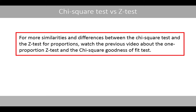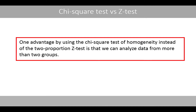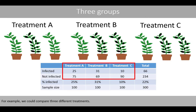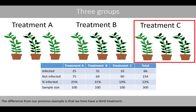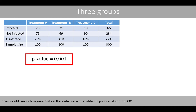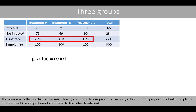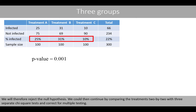For more similarities and differences between the chi-square test and the z-test for proportions, watch the previous video about the one-proportion z-test and the chi-square goodness-of-fit test. One advantage of using a chi-square test of homogeneity instead of the two-proportion z-test is that we can analyze data from more than two groups — for example, comparing three different treatments. If we run a chi-square test on data including a third treatment, we obtain a p-value of about 0.001, leading us to reject the null hypothesis. We could then compare treatments two by two with separate chi-square tests and correct for multiple testing.